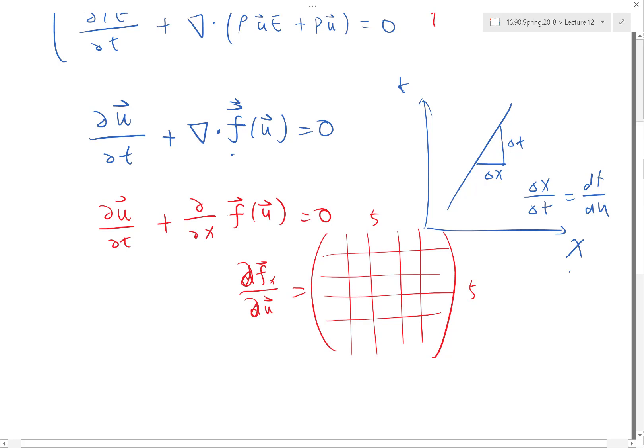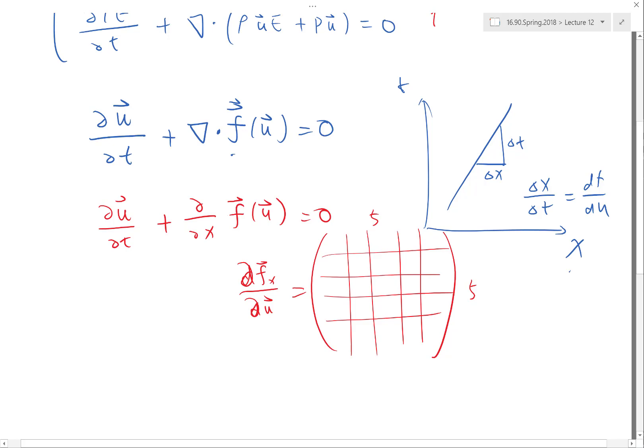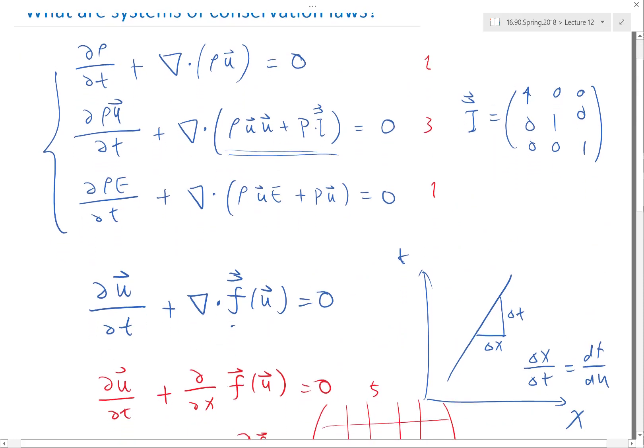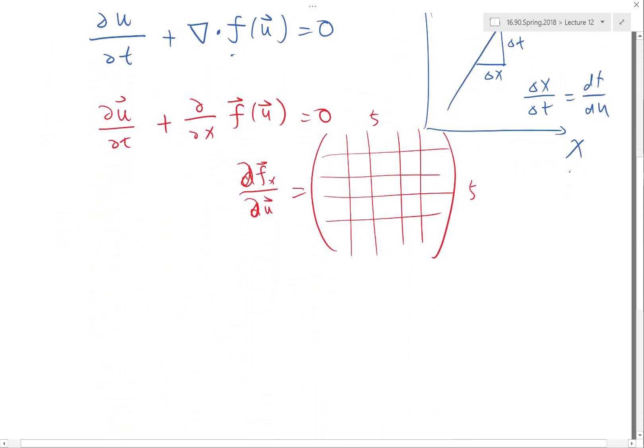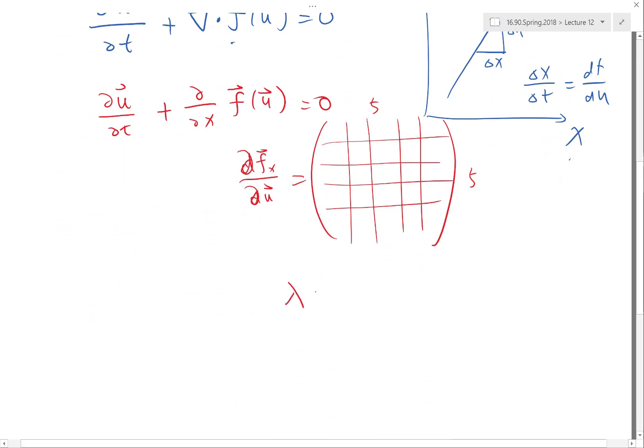It turns out if you do this analysis for Navier-Stokes equation with ideal gas laws, the λ for this equation would turn out to be, for example in the x direction, the λs would be equal to ux + c.